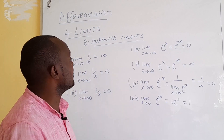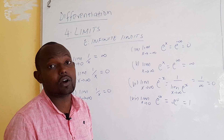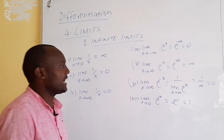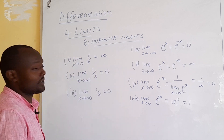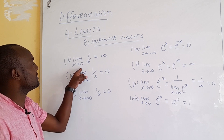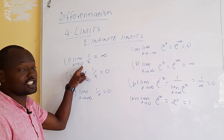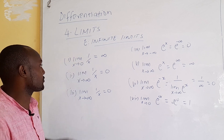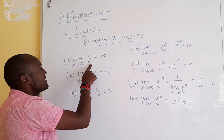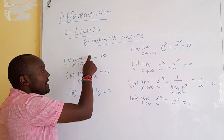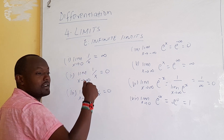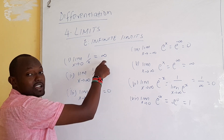Now, we are looking at infinite limits, where we apply infinity in our limits. I have just written a few illustrations. If you have the limit as x approaches 0 of 1 over x, you replace directly with x equals 0. So 1 over 0 will be infinite. Any number divided by 0 we say will be infinite.